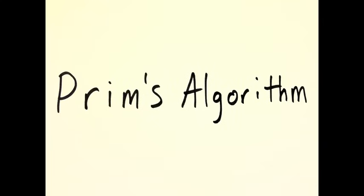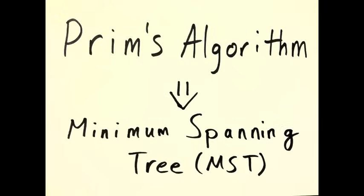This video will show you the correct way to run Prim's algorithm on a graph. Prim's algorithm results in a minimum spanning tree, a minimum weight connected graph with no cycles.